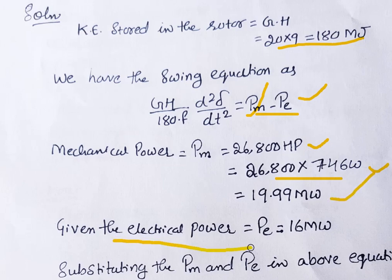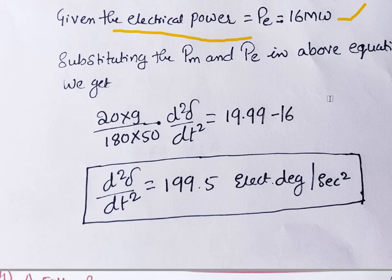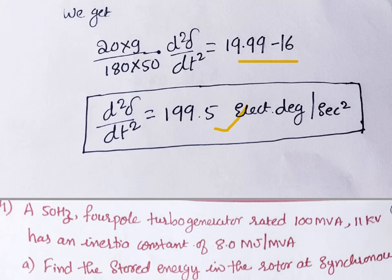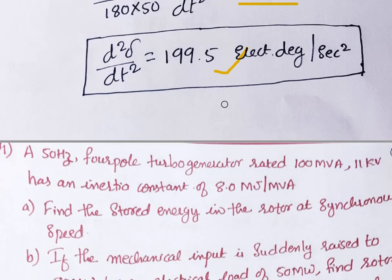The electrical power is directly given as 16 MW. Substituting P_m and P_e into the swing equation: 19.99 − 16 = 3.99 MW. With G·H = 20 × 9 and 180 × 50 in the denominator, solving for d²δ/dt² gives approximately 199.5 electrical degrees per second squared. This is the final answer for problem 3.